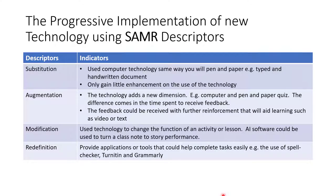Now, the progressive implementation of new technology using SMART descriptors. Let us look at the descriptors and the indicators. Technology is shifting from what it used to be — in the case of adoption to adaptation. SMART came up with four descriptors: the first is substitution, augmentation, modification, and redefinition. Now, what are the indicators that will enable you to know that a technology is substitution and not augmentation?